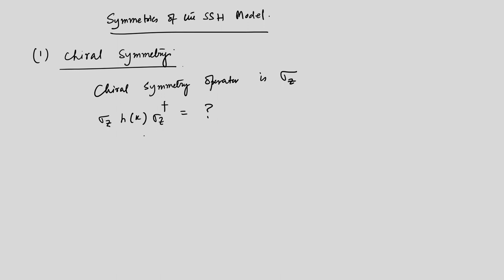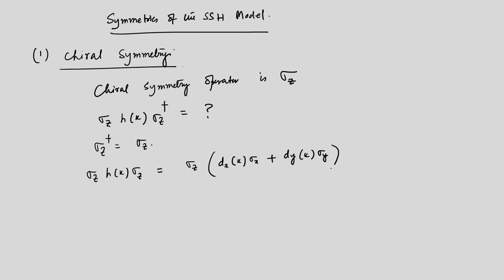Since sigma_z is Hermitian, sigma_z dagger equals sigma_z. We need to compute sigma_z times H(k) times sigma_z, which equals sigma_z times [dx(k) sigma_x plus dy(k) sigma_y] times sigma_z. We are fortunate not to have a dz term here. Since dx and dy are functions of k — not matrices or operators — we need to evaluate sigma_z sigma_x sigma_z and sigma_z sigma_y sigma_z.